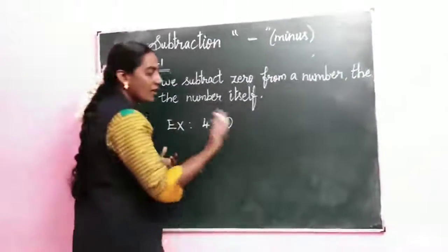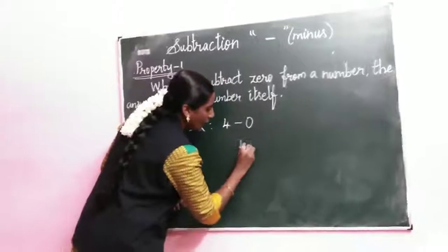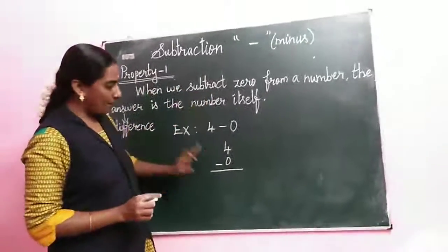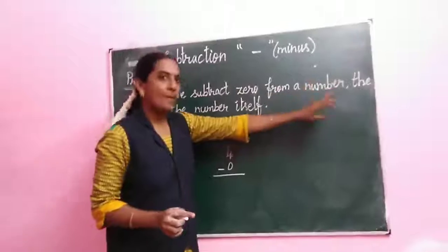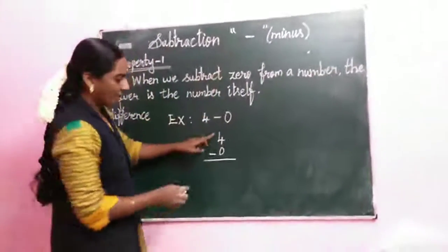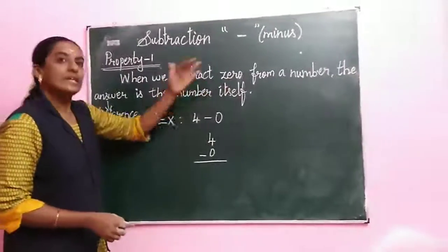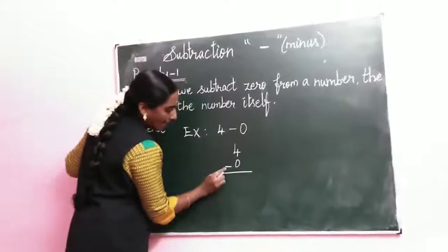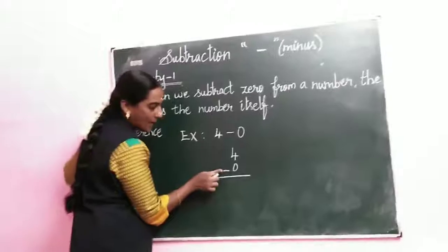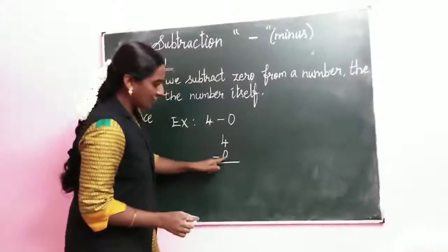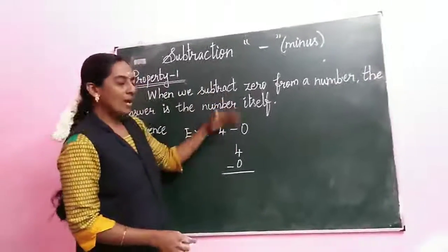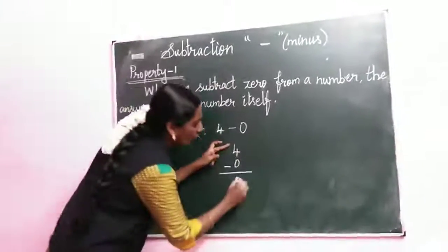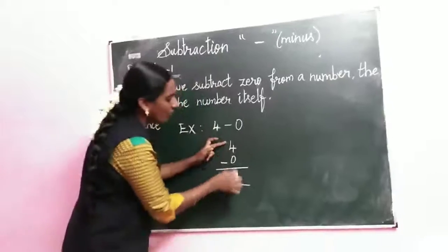For example: 4 minus 0. We are using the column method. 4 minus 0 — when we subtract 0 from any number, the answer is the number itself. 0 has no value, so the answer is the same number. 4 minus 0 equals 4.